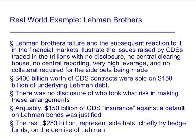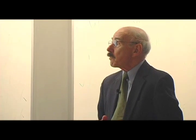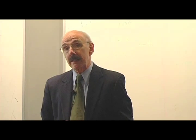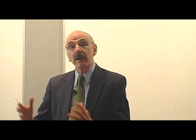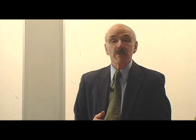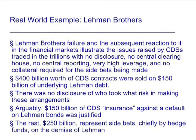Lehman Brothers' failure and the subsequent reaction by the financial markets illustrate the dangers raised by credit default swaps traded in the trillions, with no disclosure, no central clearinghouse, no central reporting, very high leverage, and no collateral required for the side bets. Remember, AIG, AAA-rated, did not have to come up with any collateral. In the market, $400 billion worth of credit default swaps were sold on $150 billion of underlying Lehman debt. You might argue that the people who held the bonds would have a justifiable reason to buy insurance in the form of credit default swaps — but what about the other $250 billion?